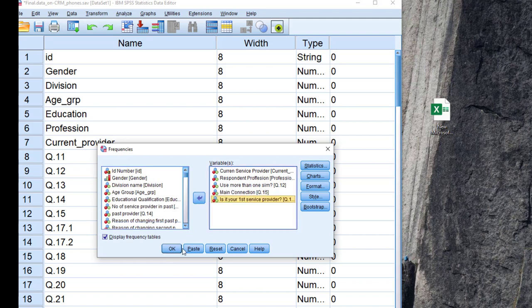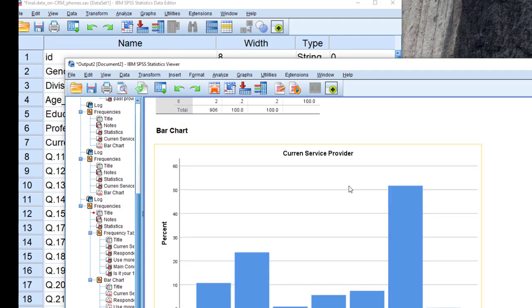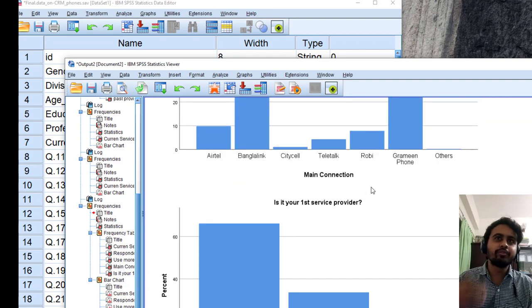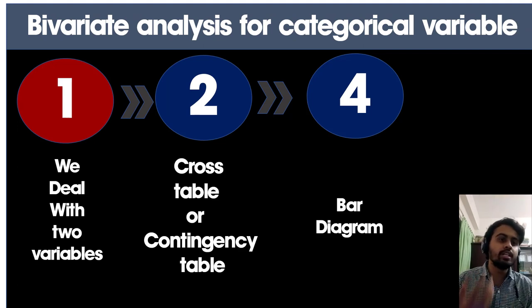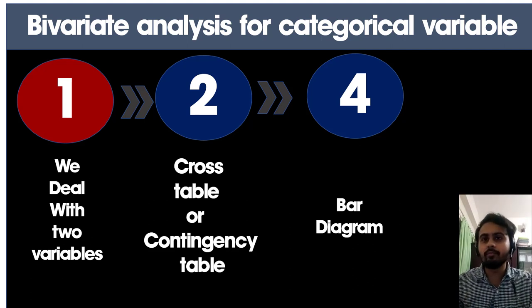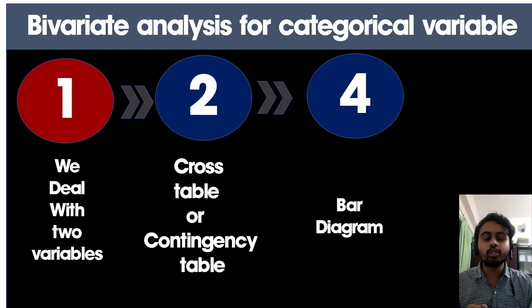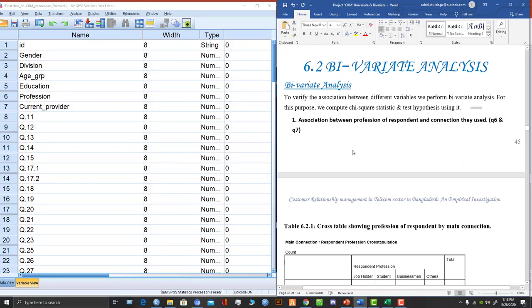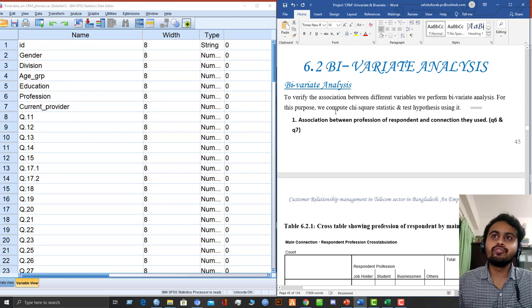To summarize univariate analysis: go to Analyze → Descriptive Statistics → Frequencies, select any variable you want, click Paste to get the SPSS syntax or directly click OK for the output, then edit as needed. Now moving on to bivariate analysis — this means dealing with two variables at once. For univariate we used one variable and a frequency table; for bivariate we use a cross table or contingency table, and for graphical analysis a bar diagram.